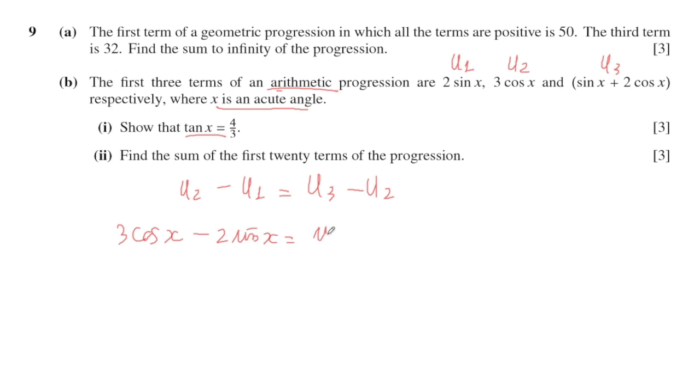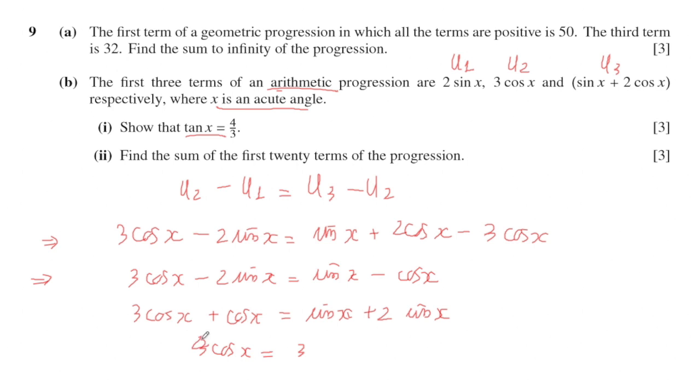3 cos x minus 2 sin x equals sin x plus 2 cos x minus 3 cos x. I will simplify this equation. Here sin x minus cos x, and I will change the position so that minus cos x is on the right-hand side, and change the position of minus sin x from left to right.